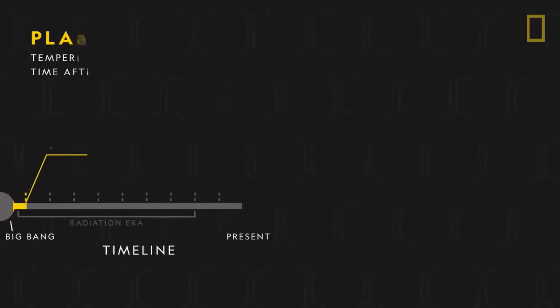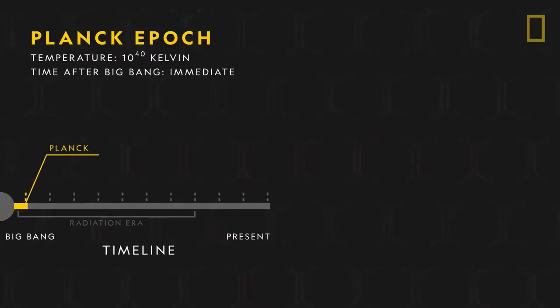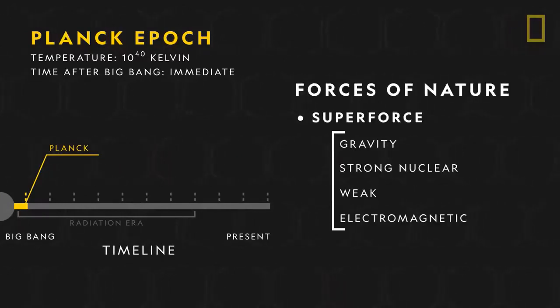The earliest is the Planck epoch. No matter existed in the universe at this time, only energy and the ancestor to the four forces of nature, the superforce. At the end of this stage, however, a key event occurred in which gravity split away from the superforce.